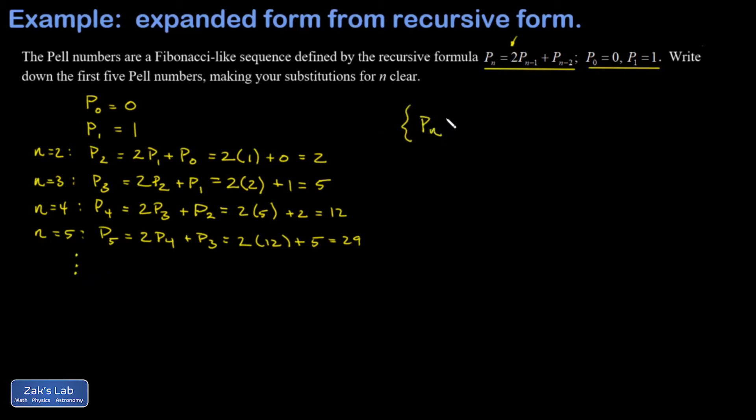We could write that the sequence of Pell numbers in expanded form is 0, 1, 2, 5, 12, 29, dot dot dot, and we're done.